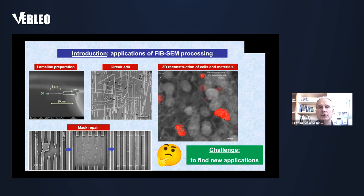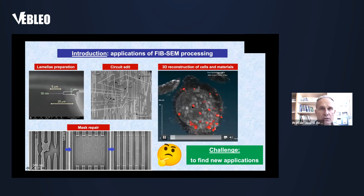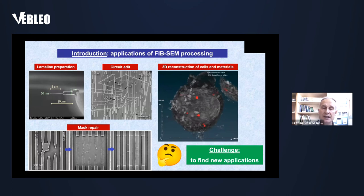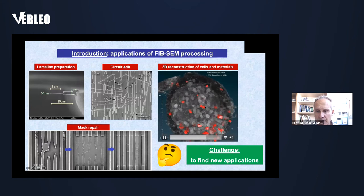Another application is mask repair. In optical lithography, photomasks are very expensive and sometimes have small defects. You can use FIB-SEM to remove the defective part and regrow material to reconnect and repair the defect. You can also do slice-and-view: the focused ion beam makes sequential slices while the SEM takes images, and from 100 or 200 images you reconstruct the three-dimensional shape — for example, a cancer cell with magnetic nanoparticles.